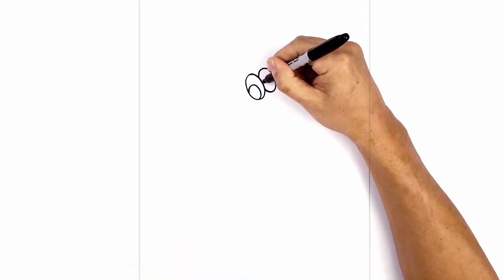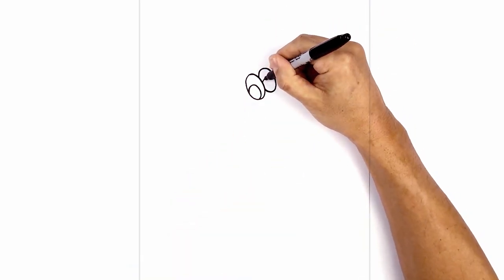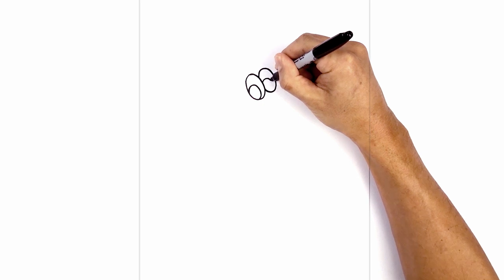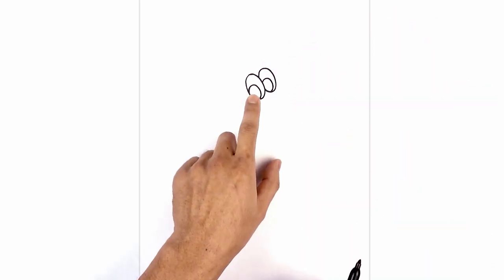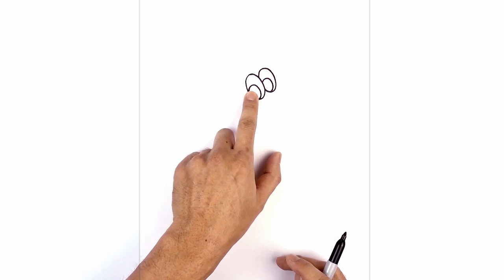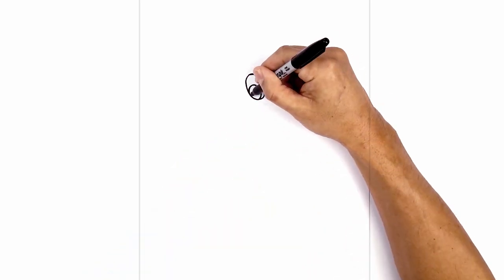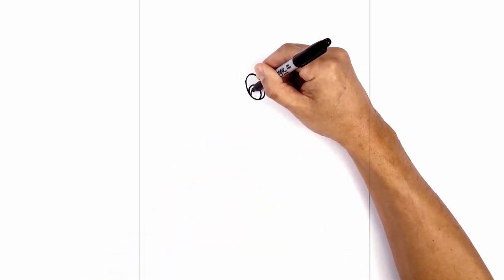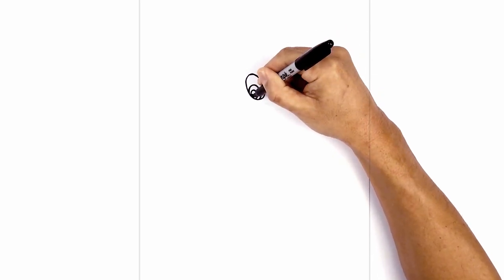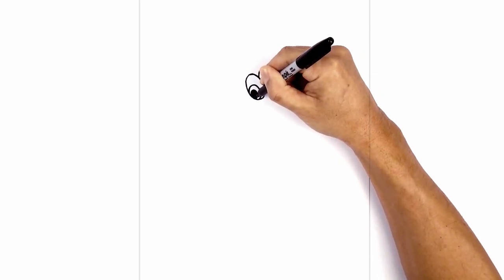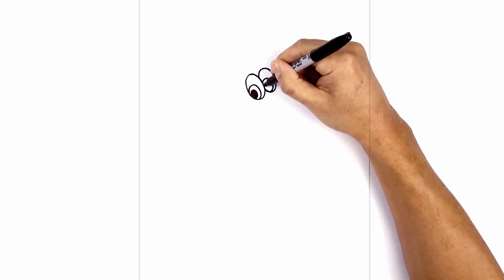We're going to do the same thing on the right. Now we're going to draw an even smaller oval on the bottom edge. Starting on the inside, we're going to curve around and then back out. We're going to fill that in black, and let's do the same thing on the right.